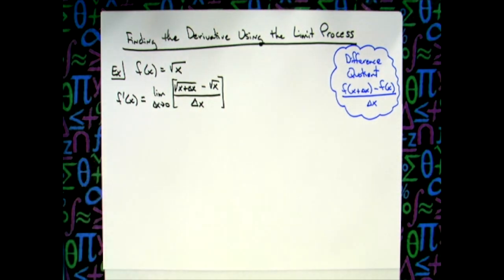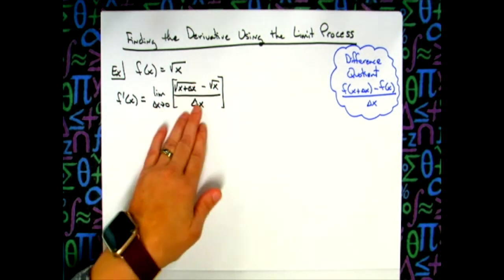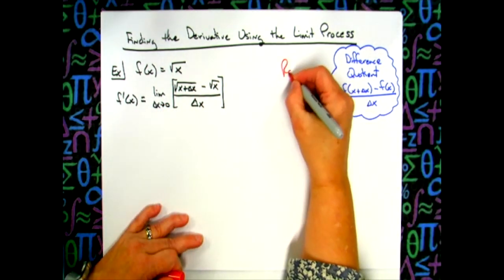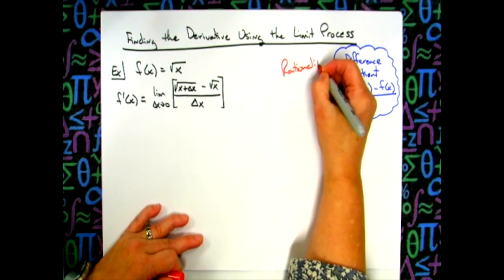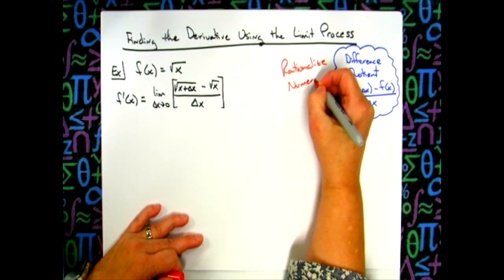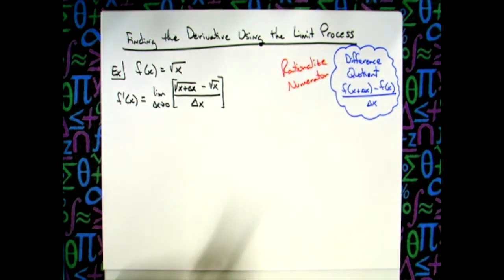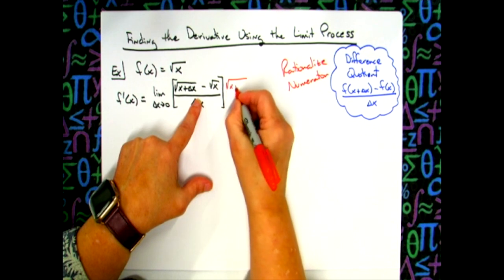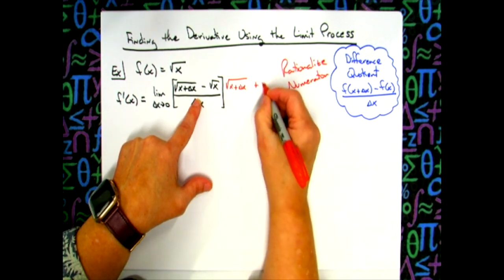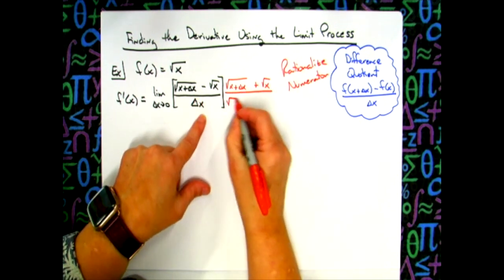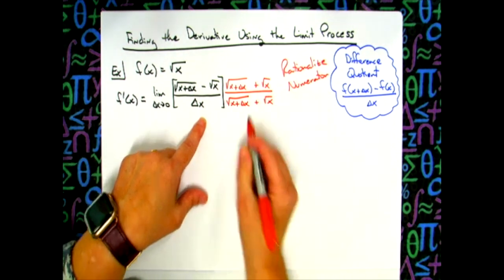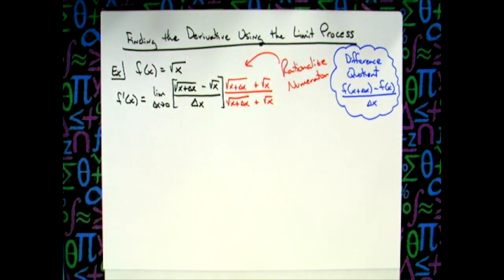I am going to go ahead and keep that in a set of square brackets. Now at this point, you've got a lot of algebra. You've got to remember or recognize the fact that if I'm going to take this limit, I need to rationalize that numerator. So we'll write down here to rationalize numerator, which means I'm going to multiply by the conjugate. So I'm going to have the square root of x plus delta x plus the square root of x over radical x plus delta x plus radical x.